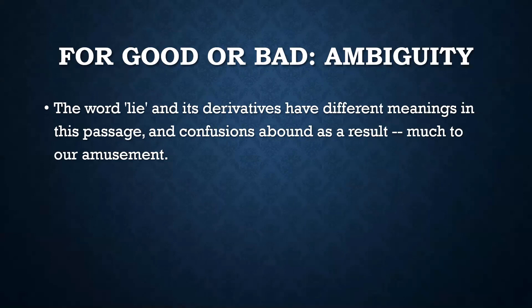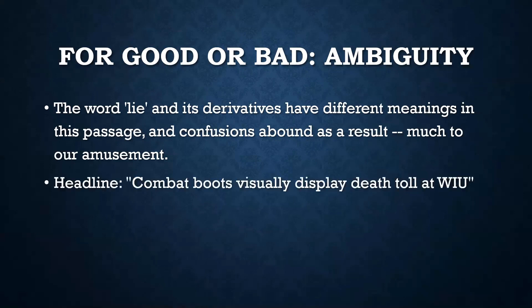Another example would be this headline seen in the WIU student newspaper: 'Combat Boots Visually Display Death Toll at WIU.' When I read that, I read it as if there was a death toll — deaths occurring at WIU — and these boots are keeping track of those deaths, which is not, of course, what was intended. Another reading might be that combat boots have some LED screen on them displaying numbers for the death toll. You can see there are various forms of ambiguity here.